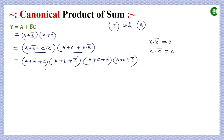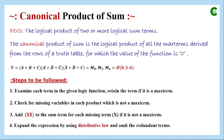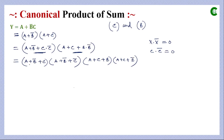Now all four terms have all variables either in original or complemented form, giving us a canonical product of sum form. Following the last step, we expand using the distributive law and omit redundant terms. The first maxterm (A plus B-bar plus C) and the fourth maxterm also give (A plus B-bar plus C), so these two are redundant — we keep only one occurrence. The remaining distinct maxterms are: (A plus B-bar plus C-bar) and (A plus B plus C). So this logical function has three distinct maxterms.